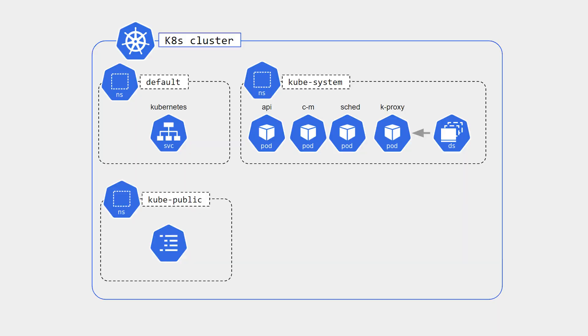The next one is kube-public. This namespace is readable and accessible by all users. It is automatically created when a Kubernetes cluster is created and contains all public information like cluster information. Anyone can access this information.